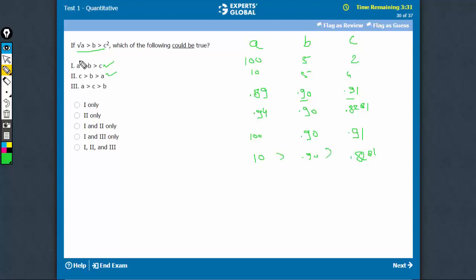So, this condition is fulfilled. Square root a is greater than b is greater than c square. However, originally a is the greatest, 100. Then c is the greater among b and c, 0.91, and then b is the smallest here. However, on these operations, the values change. So, all three are possible.